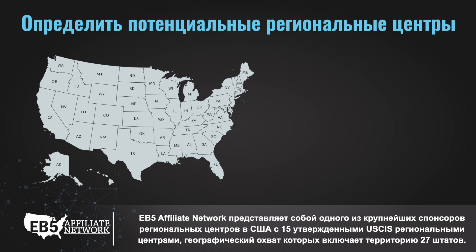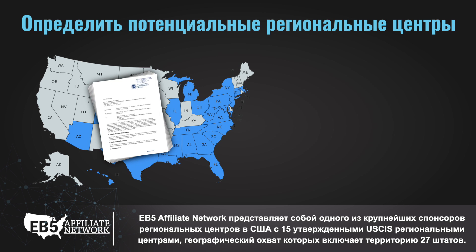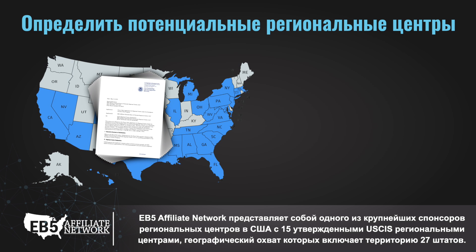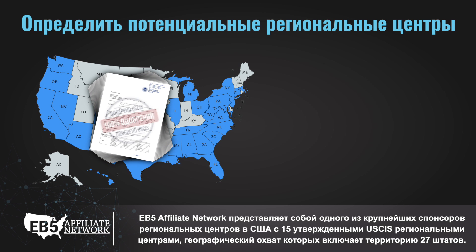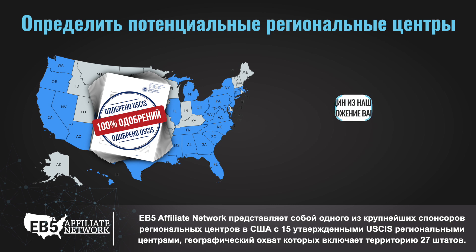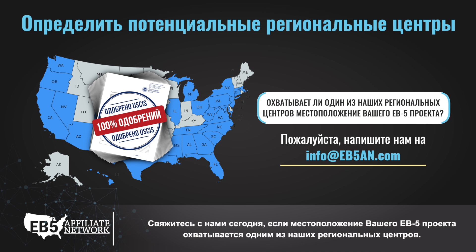EB-5 Affiliate Network is one of the largest regional center sponsors in the United States, with 15 USCIS-approved regional centers offering geographic coverage across 27 entire states. Contact us today to find out if your EB-5 project is covered by one of our regional centers.